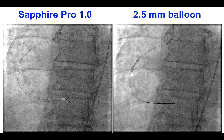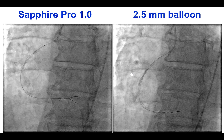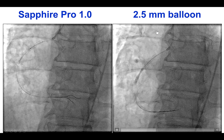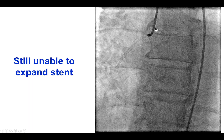It was extremely challenging to wire through that stent and also extremely challenging to deliver equipment through it. Eventually a Sapphire Pro 1.0 mm was able to cross. There was some predilatation up to 2.5 mm, but once again the stent could not be expanded.